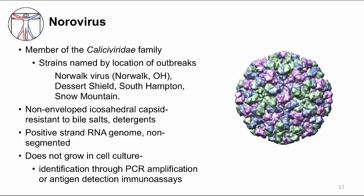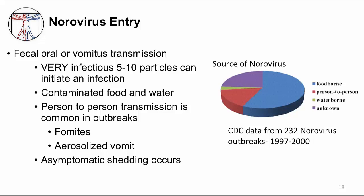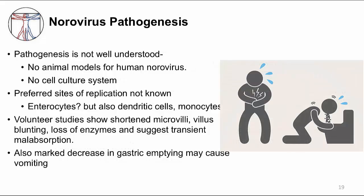Norovirus is very infectious — you only need five to ten viral particles to become sick. It's transmitted by contaminated food and water, and person to person via fomites and even aerosolization of vomit. Asymptomatic shedding can also occur, making it easy to imagine a huge outbreak on a cruise ship. The pathogenesis of norovirus is of great interest, but because it can't be cultured and there are no animal models, not much is known. In vivo, replication likely involves enterocytes, but dendritic cells and monocytes in the mucosa may also be reservoirs. In volunteer studies, changes in the villi and shortened microvilli are seen, which may contribute to diarrhea. Decreased gastric emptying was also observed, which may contribute to vomiting.